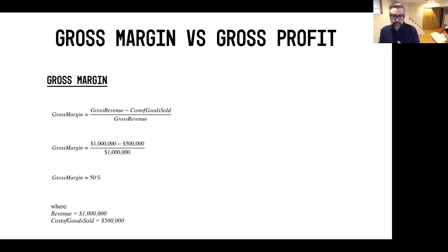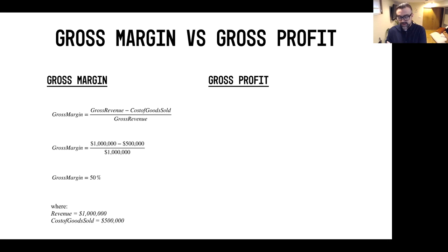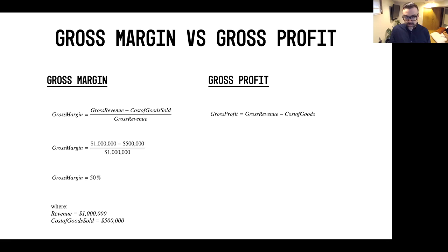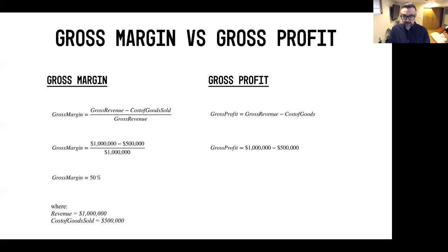Now on the flip side, the gross profit number is very simple. You take your gross revenue minus your cost of goods sold, and that yields your gross profit. So if you take a million dollars minus $500,000, you're left with $500,000 in gross profit.